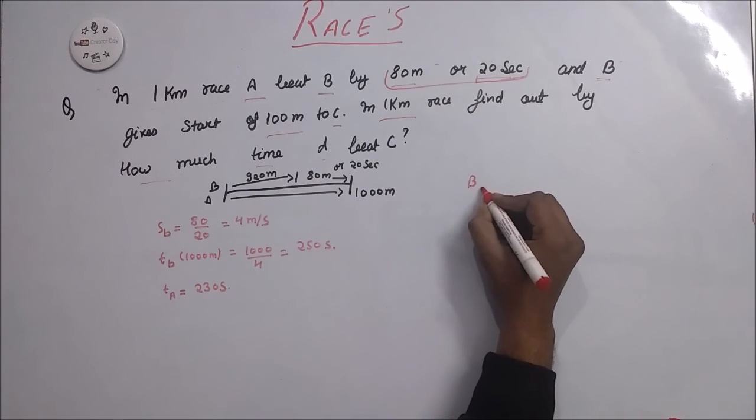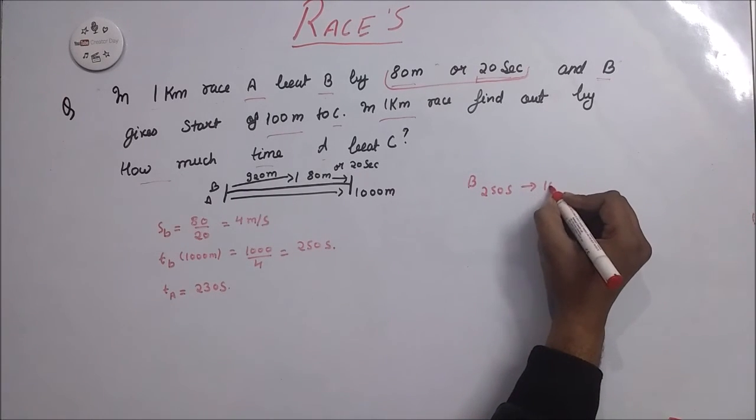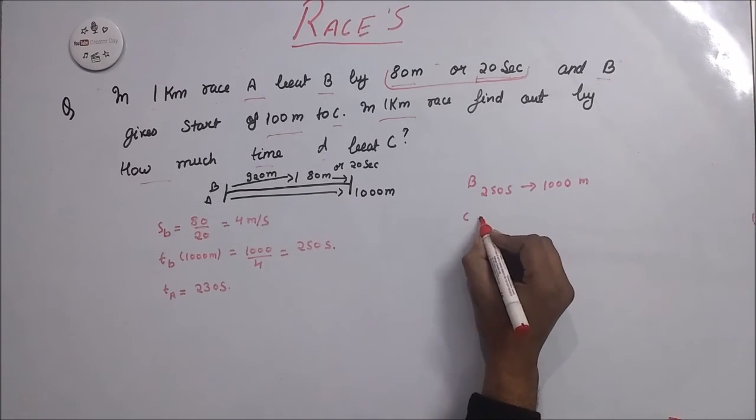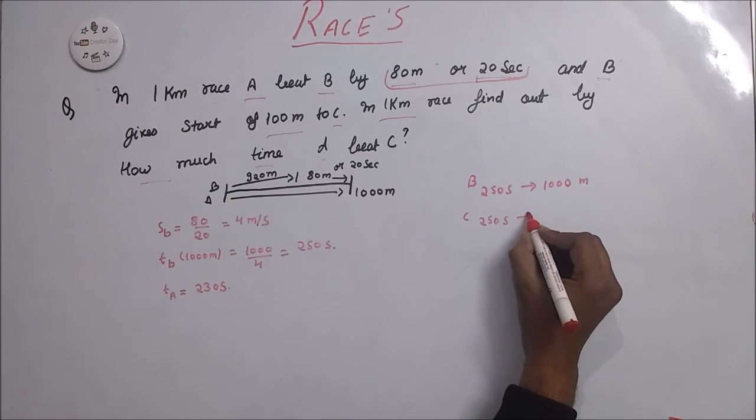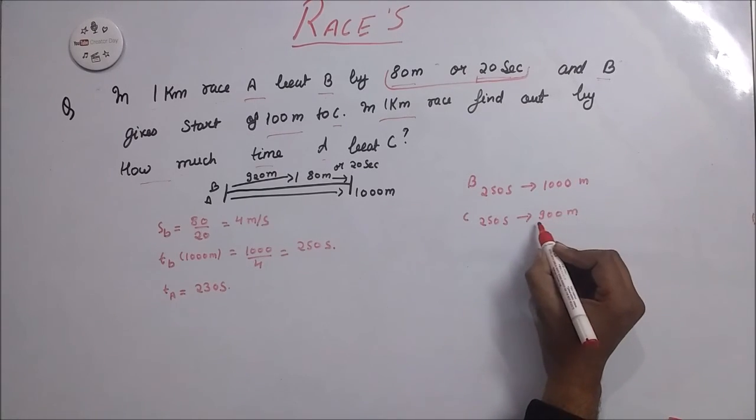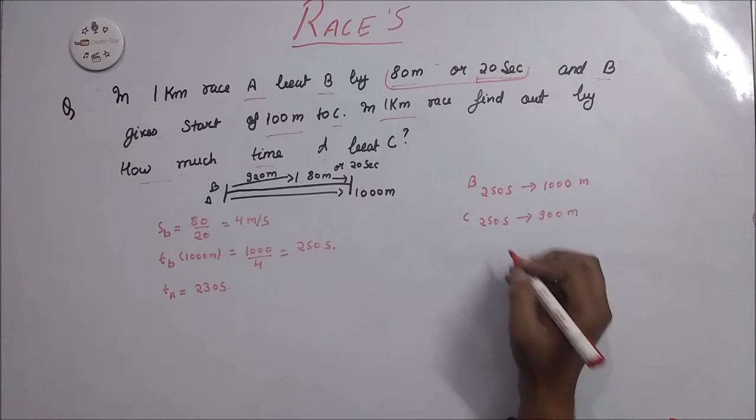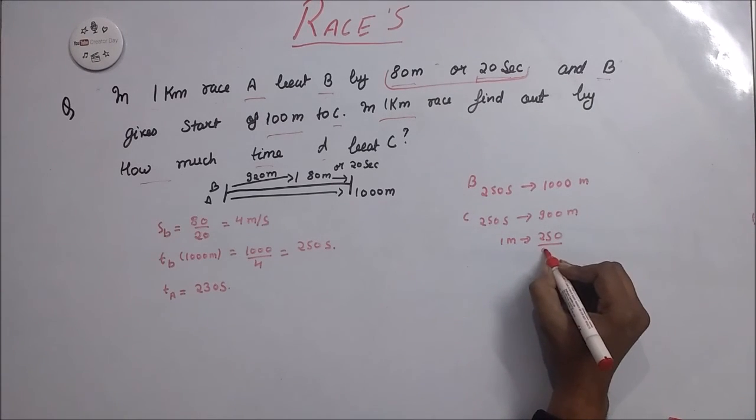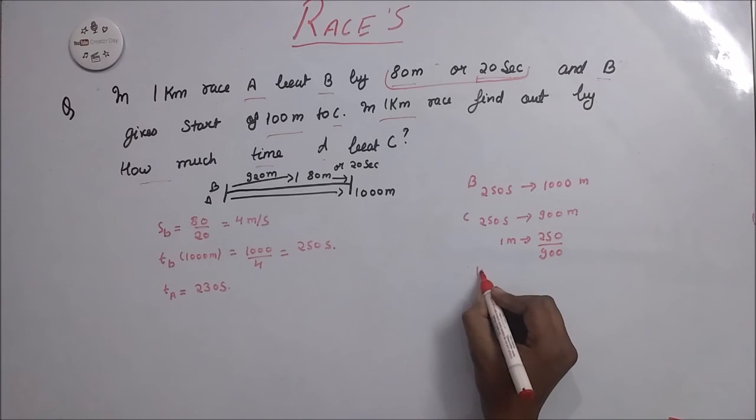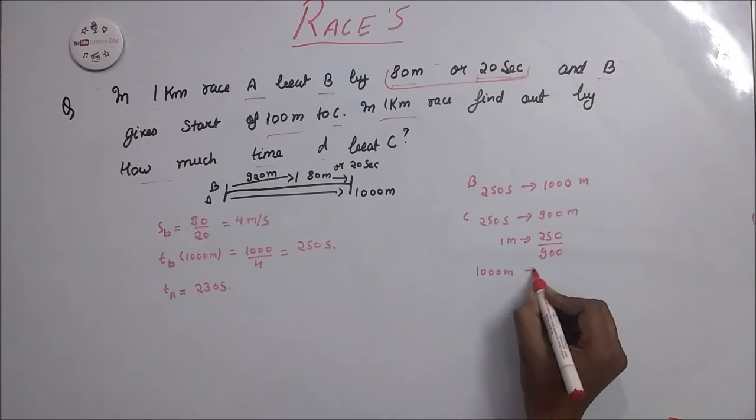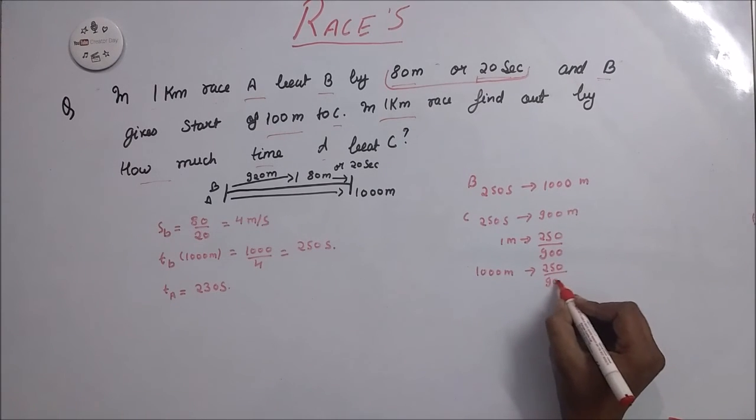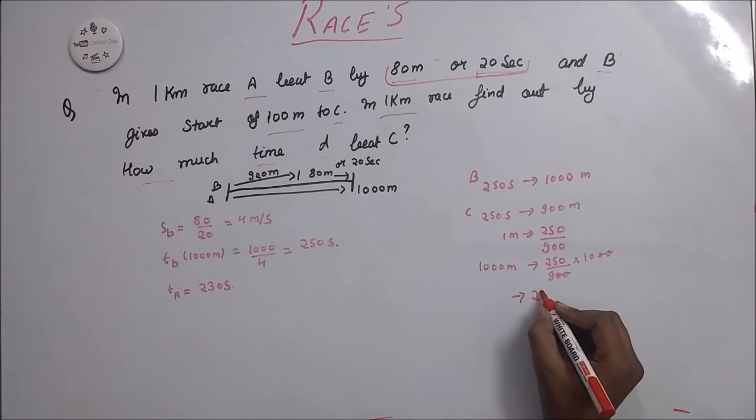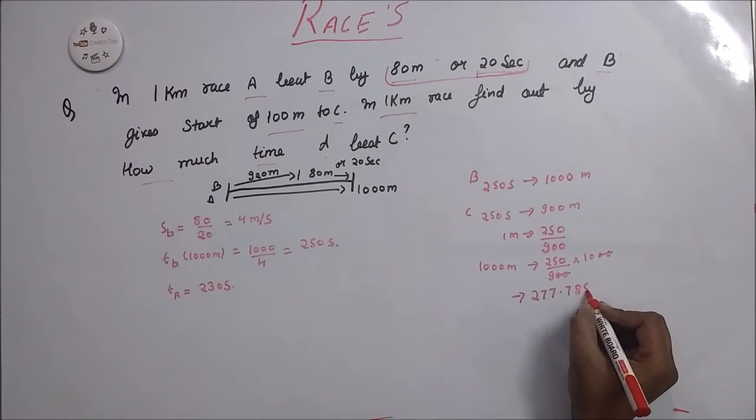Now we need to calculate what is the time for C. Here B given 250 seconds for 1000 meters. And for C, 250 seconds for 900 meters. This is 900 because of 100 meter lead. Now 1 meter is equal to 250 divided by 900 into 1000. This will give you 277.785 seconds.